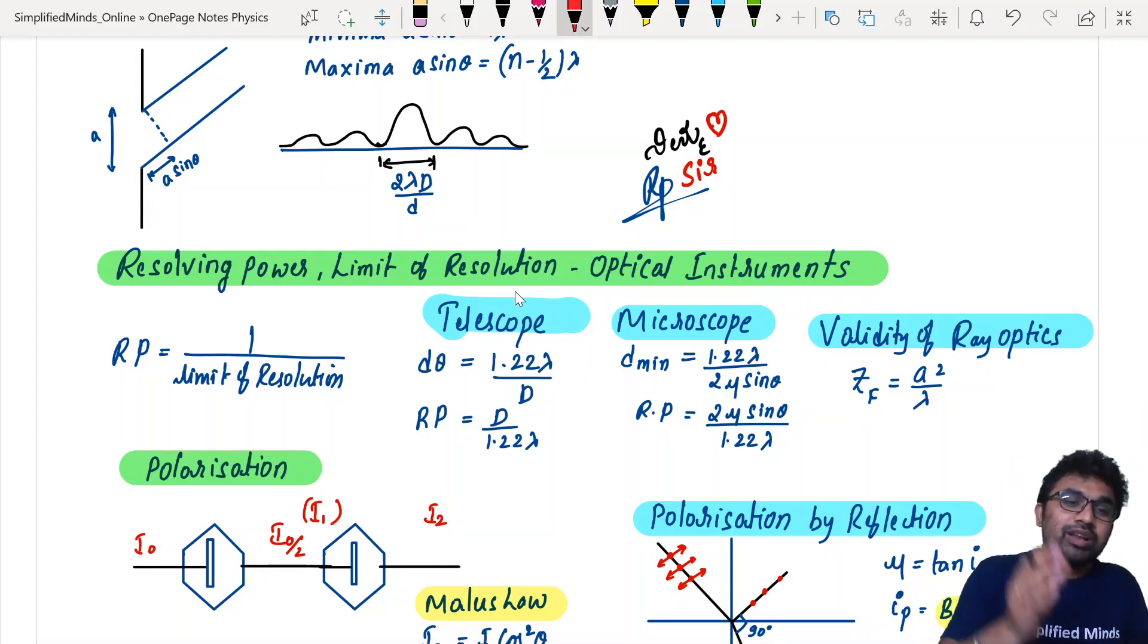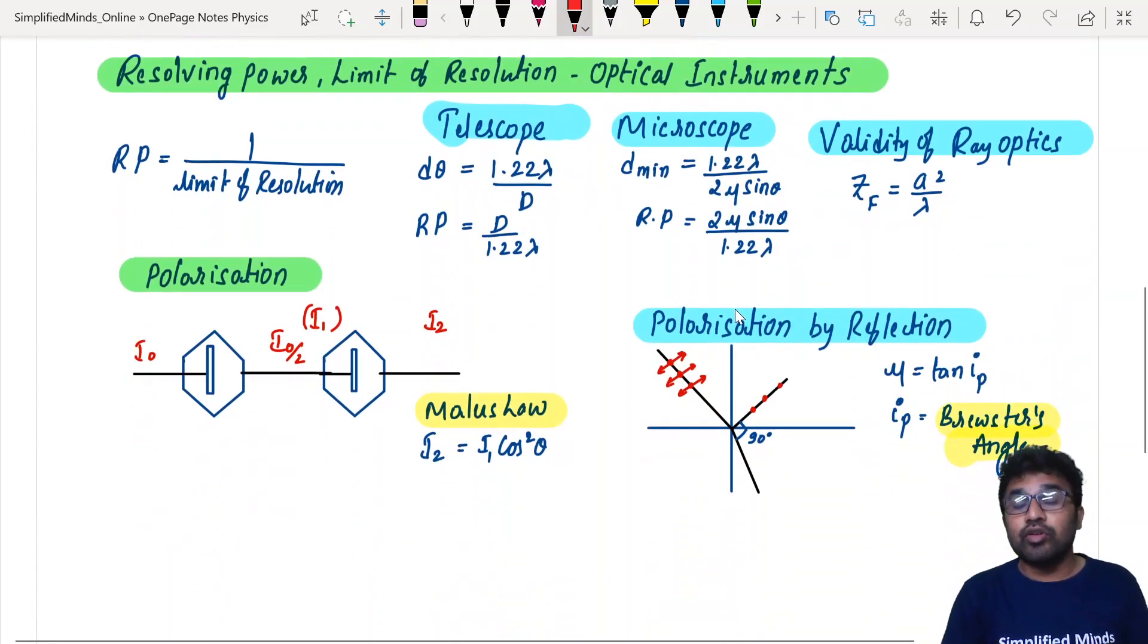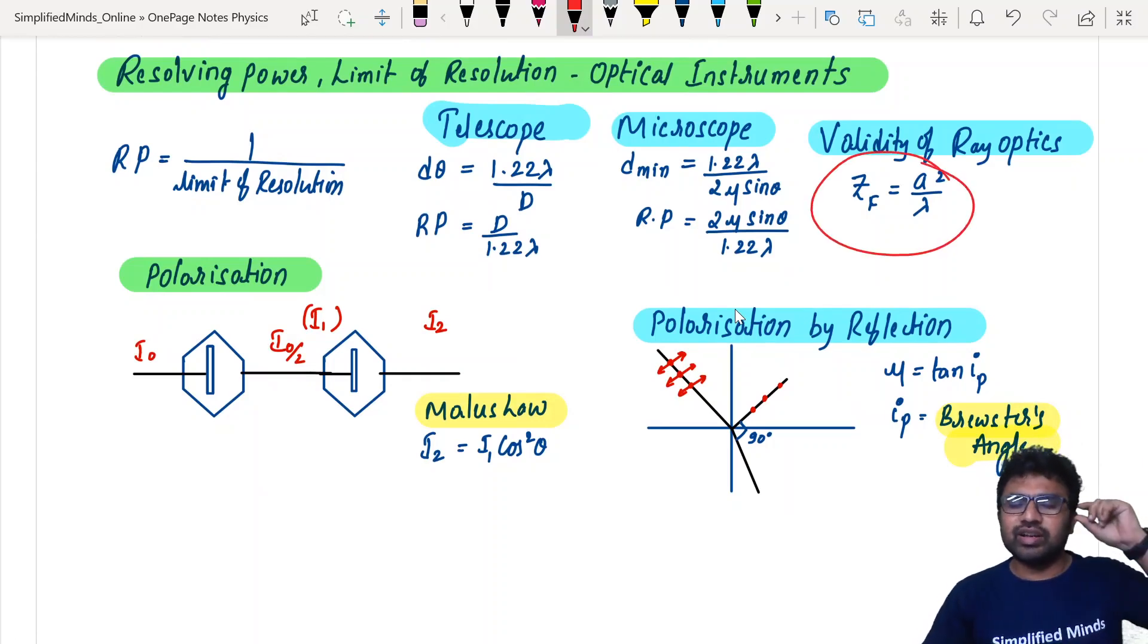Coming to resolving power, limit of resolution of optical instruments. What is resolving power? One by limit of resolution - they're reciprocal. For telescope and microscope, there's Fresnel's distance. That's the distance up to which you don't have to consider the wave nature of light. It's called the validity of ray optics, and it can be found by ZF equals A squared by lambda. For aperture also, you can find ZF equals A squared by lambda.